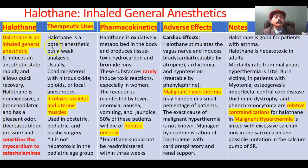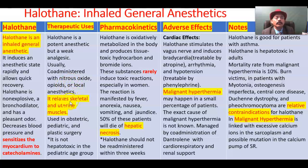Halothane is a potent anesthetic but a weak analgesic. It is usually co-administered with nitrous oxide, opioid, or local anesthetic. It relaxes skeletal muscle and also smooth muscles, such as those of the uterus and the bronchus.